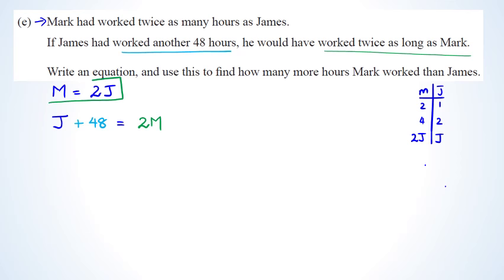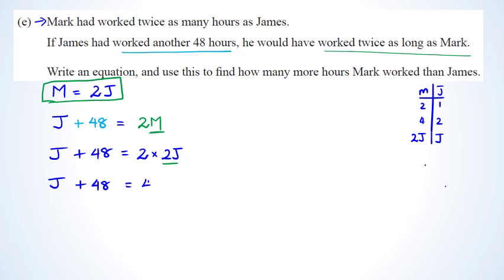Because m equals 2j, I can replace m with 2j, so the equation becomes j plus 48 equals 2 times 2j, which is j plus 48 equals 4j. Subtracting j from both sides gives 48 equals 3j, then dividing both sides by 3, I get j equals 16. So James has worked 16 hours.